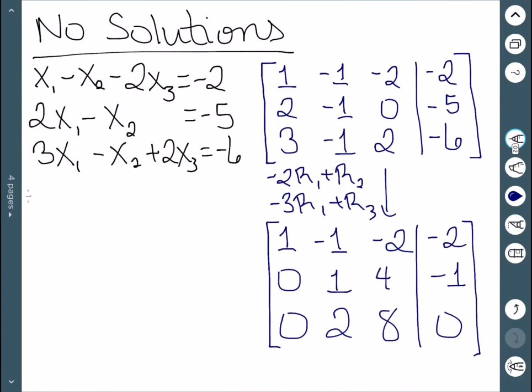The second step is to get a 1 in the second row, second column, which we can see we already have. So after that, our goal is to get zeros in the rest of the column.